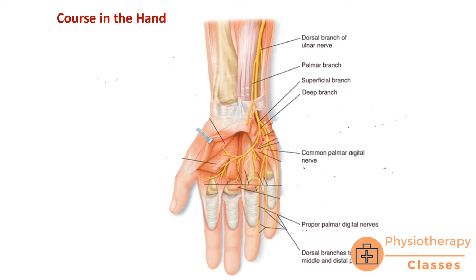The ulnar nerve passes into the hand superficial to the flexor retinaculum. It is initially under the cover of palmaris brevis, which is a small muscle. Deep to palmaris brevis, the ulnar nerve divides into a superficial branch — which supplies palmaris brevis and gives cutaneous branches to the digits — and a deep branch, which curves from medial to lateral and gives almost all the muscular branches in the hand.